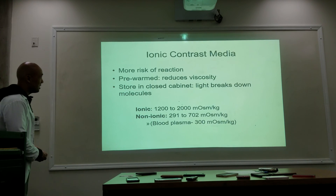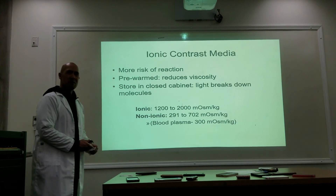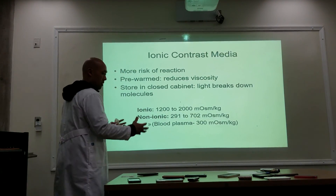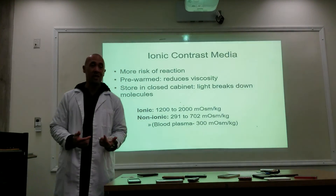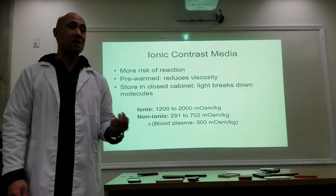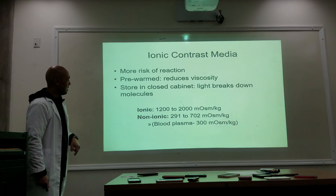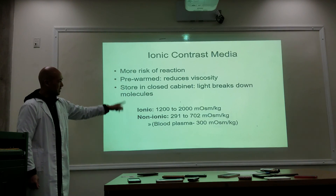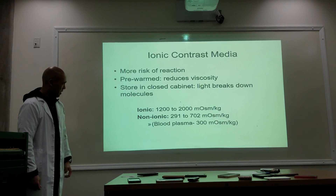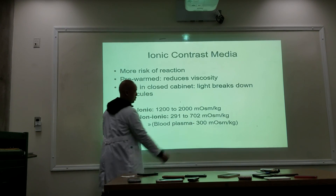Ionic contrast carries more risk of reaction. If pre-warmed, it reduces viscosity — contrast is kept in a warmer so that it's thinner and easier to inject and less painful. We keep contrast warm because light breaks down its molecular composition. Blood has about 300 milliosmoles. Ionic contrast is very thick compared to blood, while non-ionic is much closer to blood osmolality.